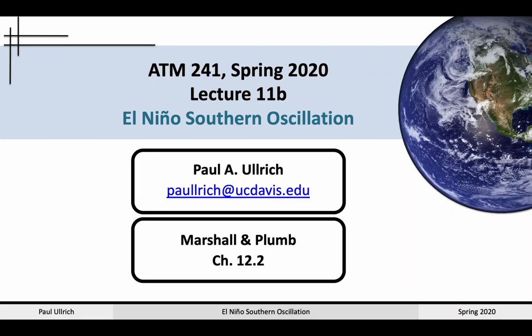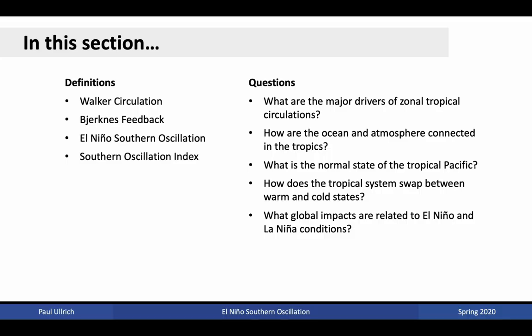Hello all, welcome back to Climate Dynamics. In this lecture we're continuing to explore atmosphere-ocean interactions. We're going to be discussing the El Niño-Southern Oscillation. The reading for this lecture is Marshall and Plum Chapter 12.2. In this section we're going to define Walker Circulation, Bjerknes Feedback, El Niño-Southern Oscillation, and Southern Oscillation Index.